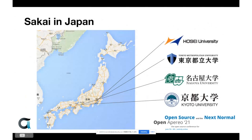Today we have four talks. The presenters belong to universities using Sakai as a university-wide learning management system: Tokyo Metropolitan University, Nagoya University, Kyoto University, and Josai University. We are members of a user group of Apereo products in Japan named Japan Apereo Community. Let's get started.